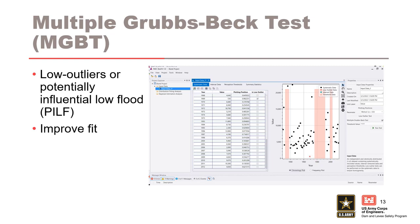Now that an annual maximum series has been entered, a low outlier test can be performed. Currently, RMC Best Fit contains the multiple grubbs-beck test as a low outlier test. The basic purpose of the low outlier test is to ensure homogeneity. It's important to identify potential and influential low flows, or PILFs, in the annual maximum flood series as they have the potential to affect the upper right-hand side of the curve.